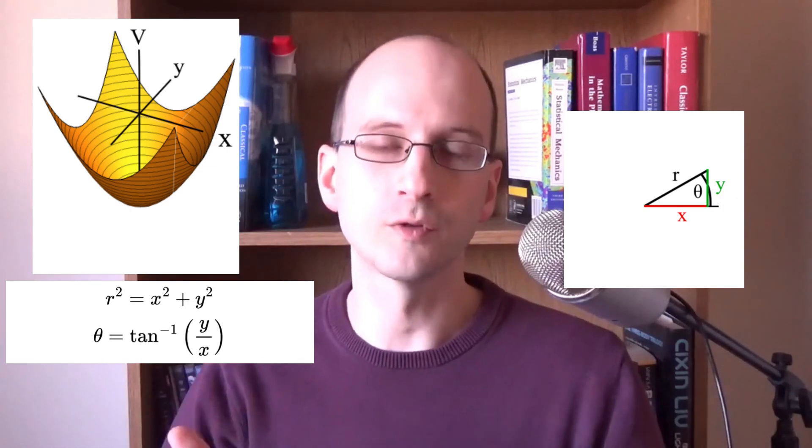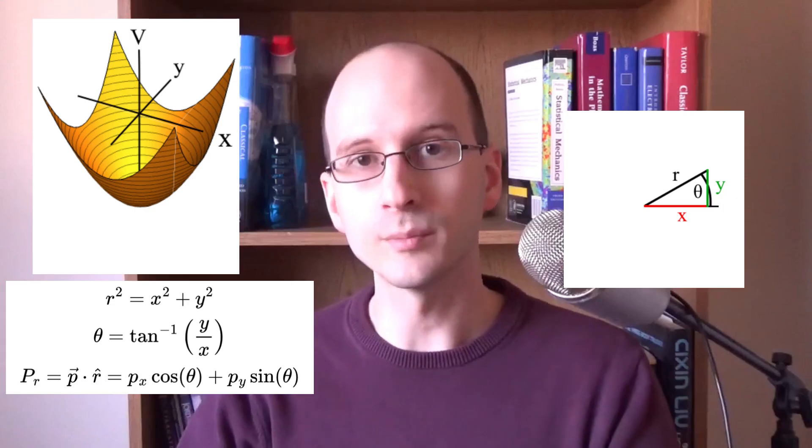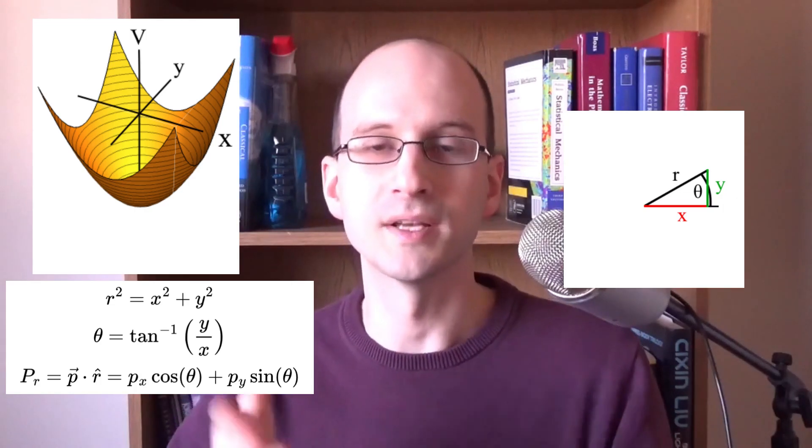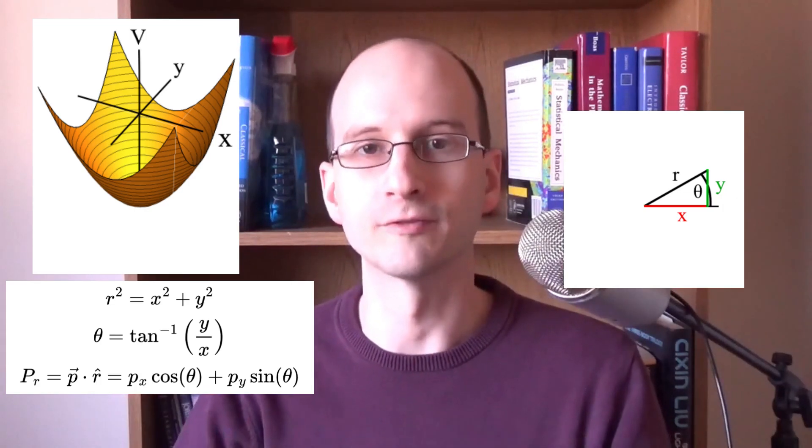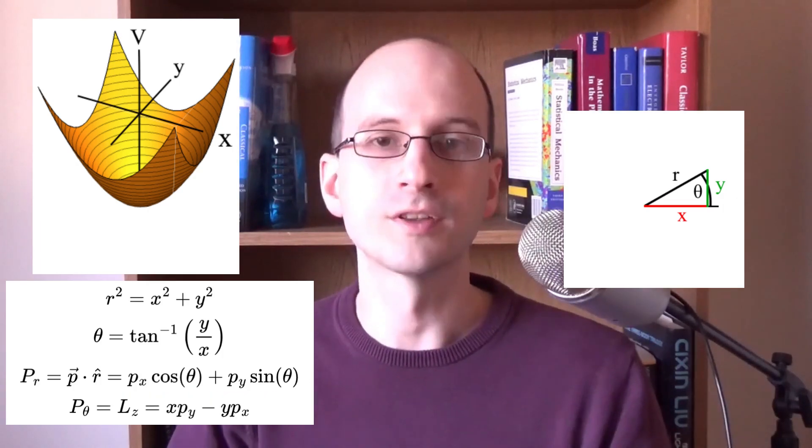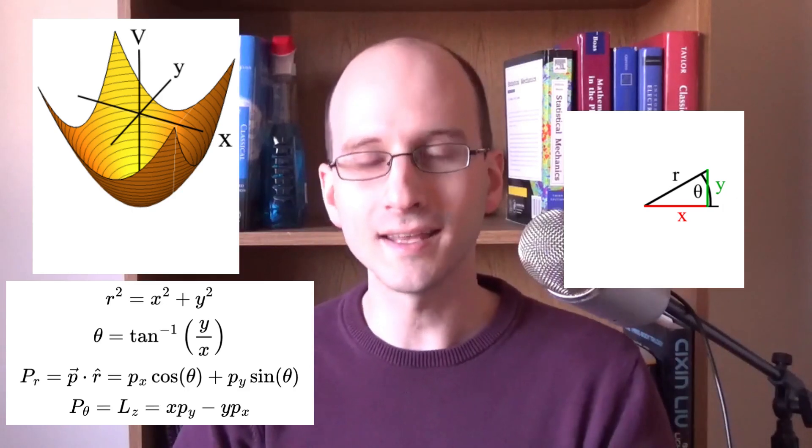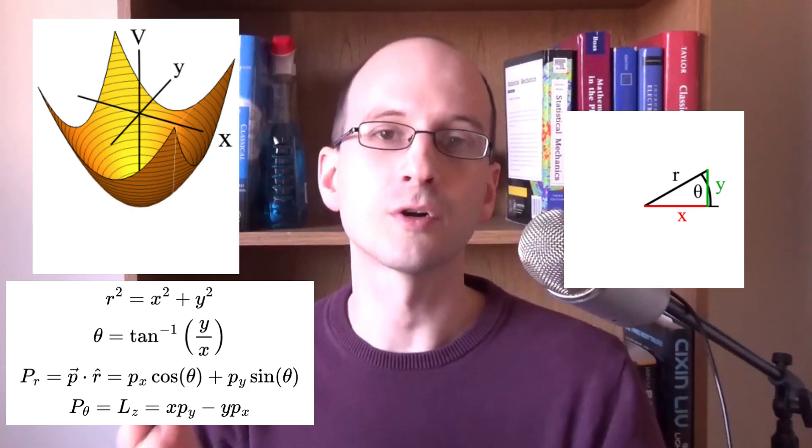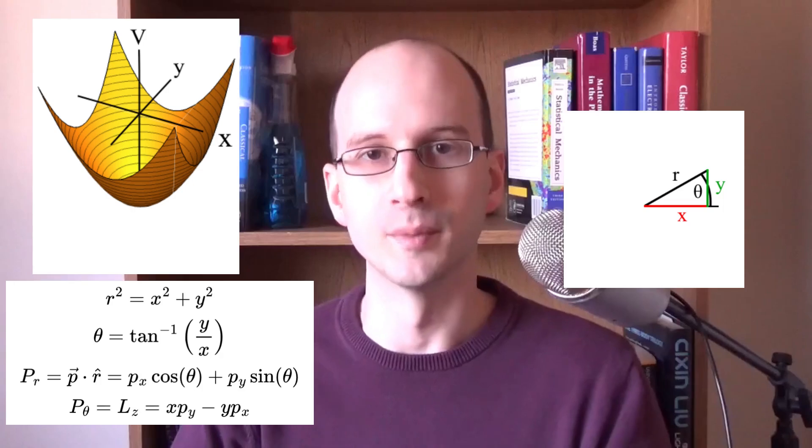We also need to transform the momentum. For the r momentum, that is the momentum in the direction toward or away from the origin, we can dot product the momentum with the displacement unit vector. For the theta momentum, we can use the angular momentum, which comes from the cross product of the displacement and the momentum.